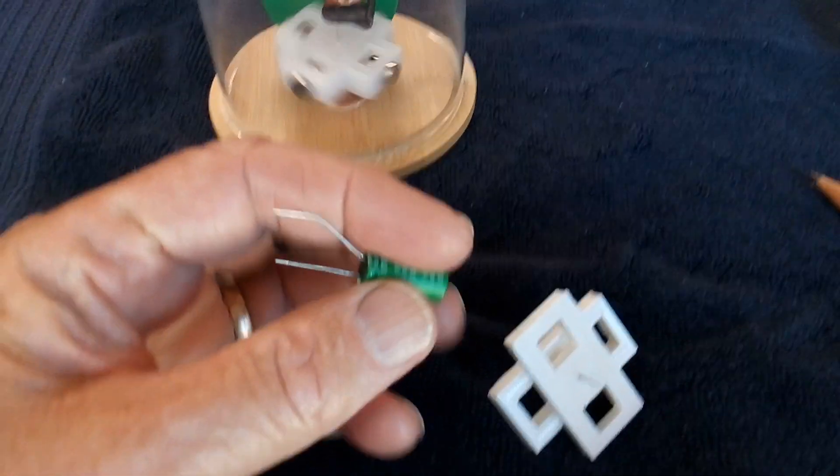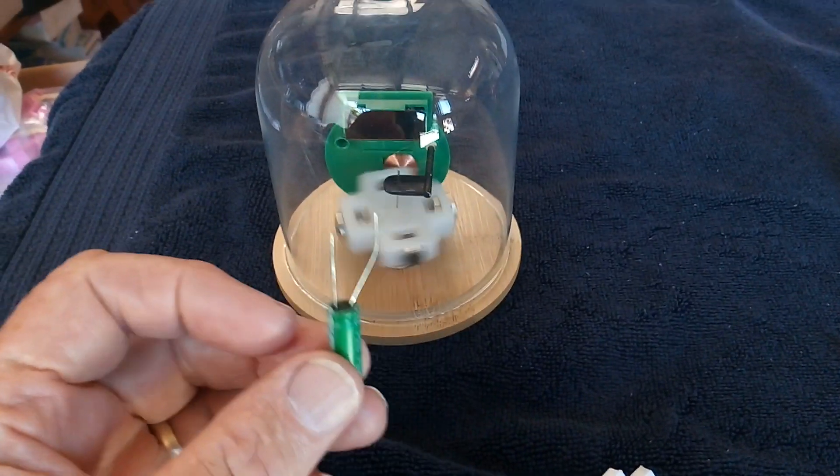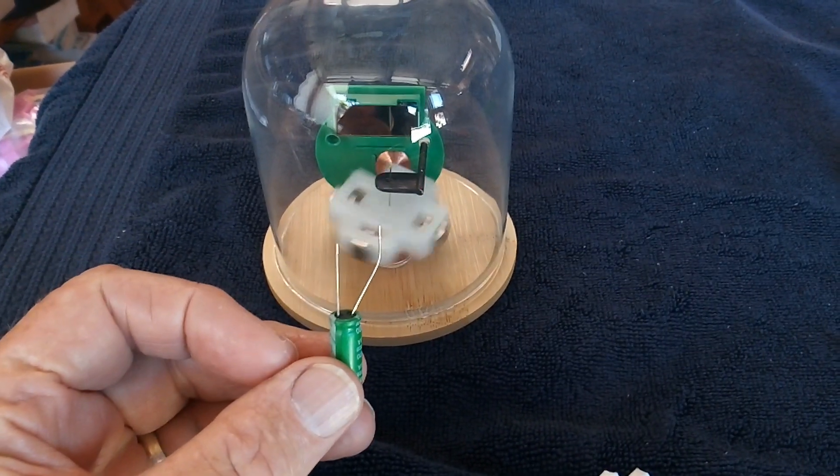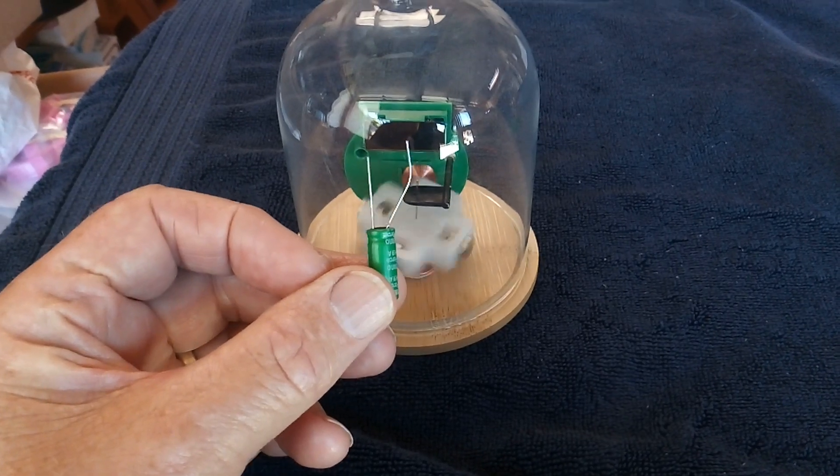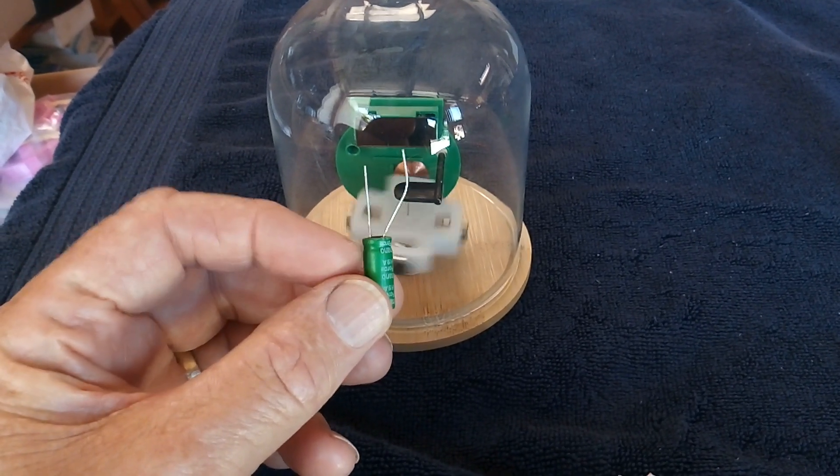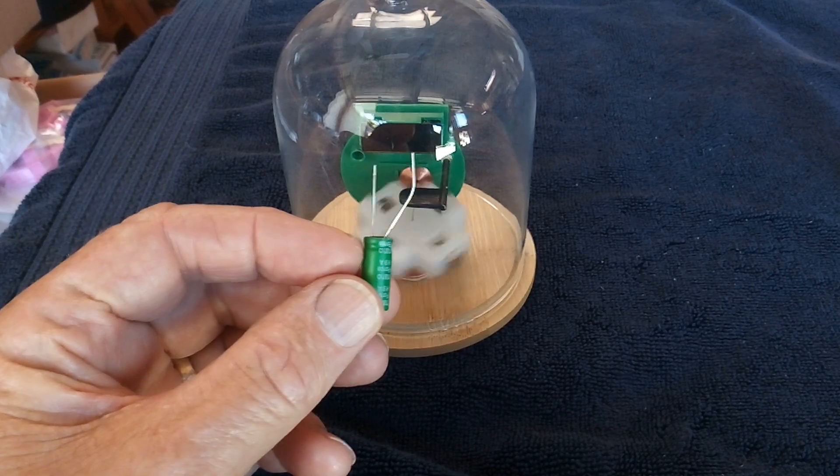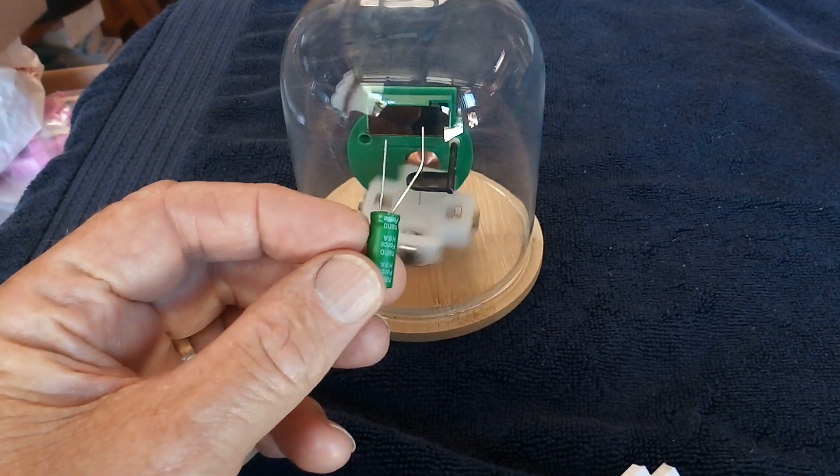This is running on the same super capacitor—this is a 3.3 farad 2.7 volt capacitor. I might just see how long it runs. I've been putting a resistor on these things, but granddad showed that you could just put it straight parallel with the solar panel and it'll get the job done.